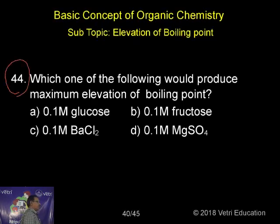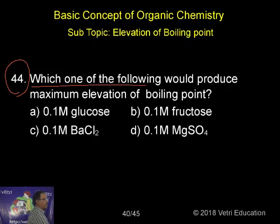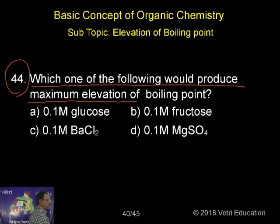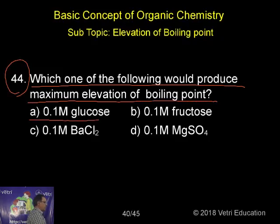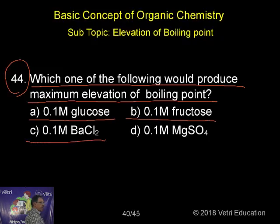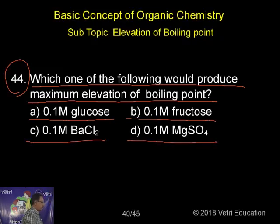Question number 44. Which one of the following would produce maximum elevation of boiling point? Option A: 0.1M glucose. Option B: 0.1M fructose. Option C: 0.1M barium chloride. Option D: 0.1M magnesium sulfate.